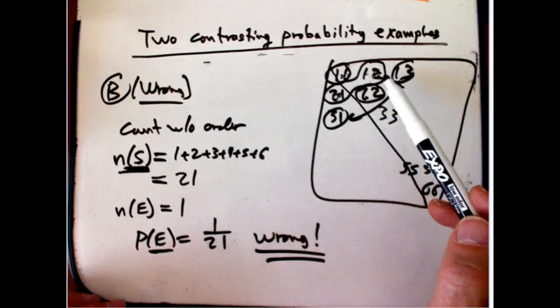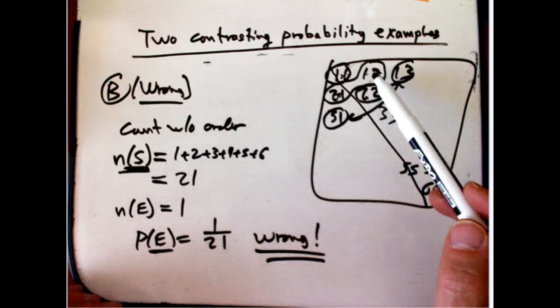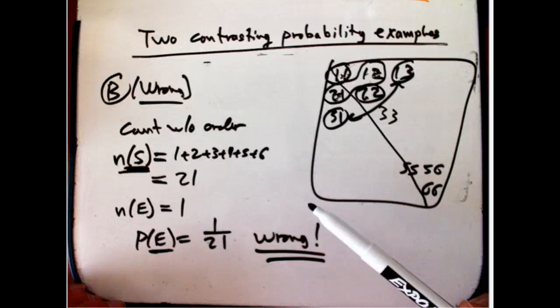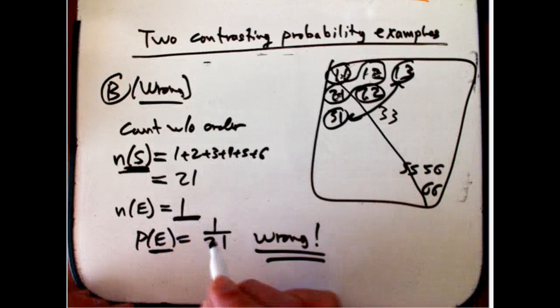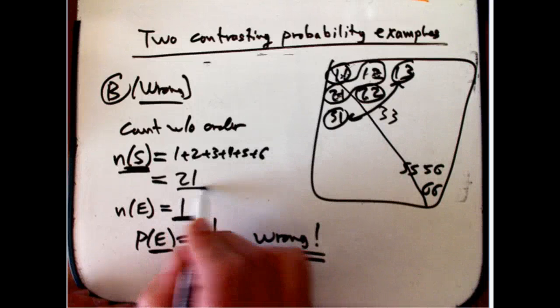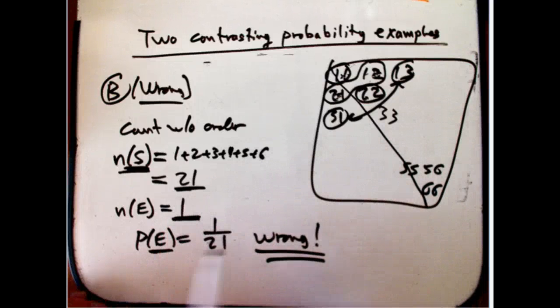I have to do that in a background where the sample space has two different kinds of outcomes. These guys and these guys, the ones along the diagonal. And these guys are twice as probable as this. And it's much more complicated to work on a problem, work in a sample space, where the outcomes, some of the outcomes have twice the probability as the others. And you certainly can't just count outcomes in the event and count outcomes in the sample space and divide if you have that non-uniformity.